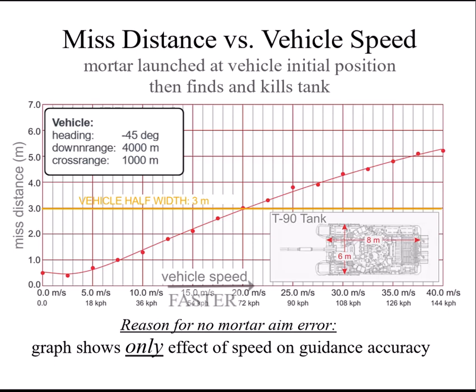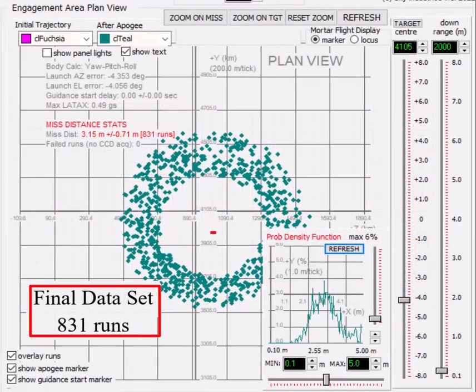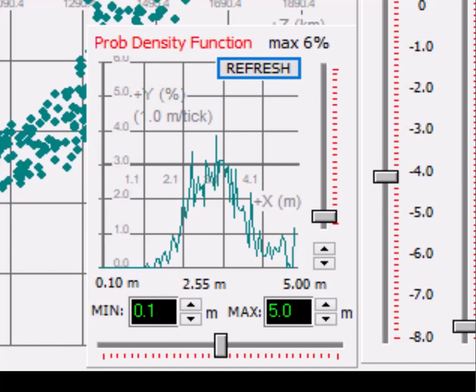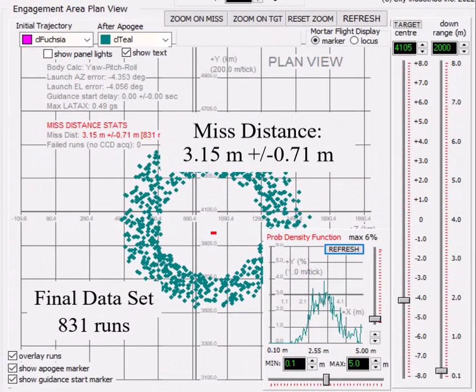As the speed goes up, the missed distance goes up, unsurprisingly. Back to the final data set, the missed distance PDF looks like this. The mean miss is 3.15 meters, plus or minus 0.71 meters, in 831 runs.